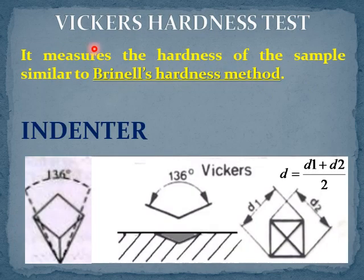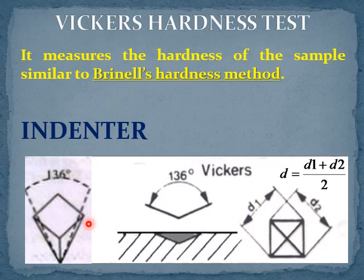The method involved in Vickers hardness testing is very similar to the Brinell hardness method. In the Vickers hardness test, an indenter which is a diamond square-based pyramid is used. The angle formed between two opposite faces is 136 degrees. It looks similar to a prism.